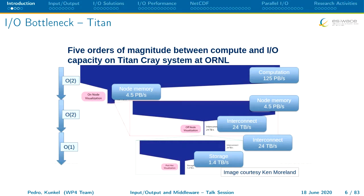This picture is not mine — it's from Cameron, a picture of a supercomputer called Titan. This picture shows exactly what I would expect as a bottleneck. We have values for computation, node memory, the interconnect between nodes, and then for storage. The difference between those values is huge — we start with computation at 125 petabytes per second.